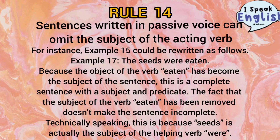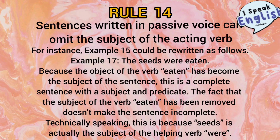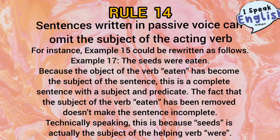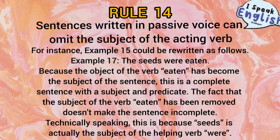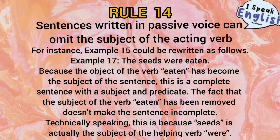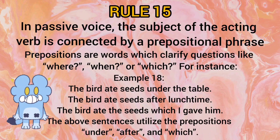Rule number 14: Sentences written in passive voice can omit the subject of the acting verb. For example, we can write 'The seeds were eaten' — because the object of the verb 'eaten' has become the subject of the sentence, this is a complete sentence with a subject and a predicate. Technically, 'seeds' is the subject of the helping verb 'were.'